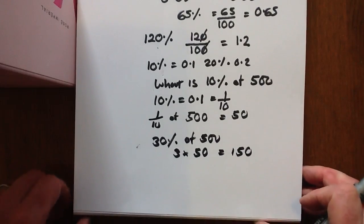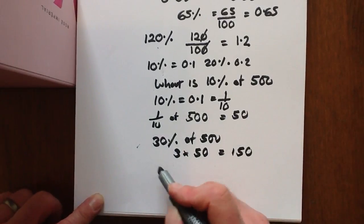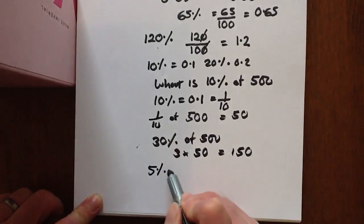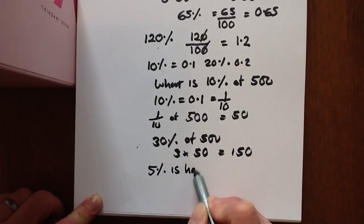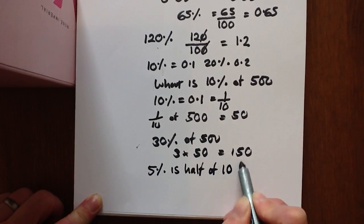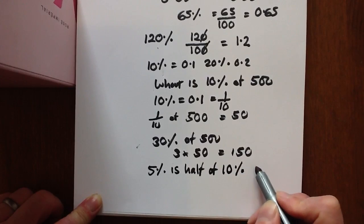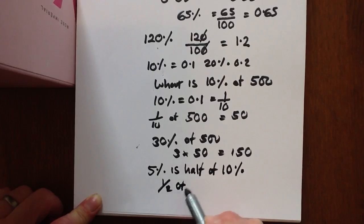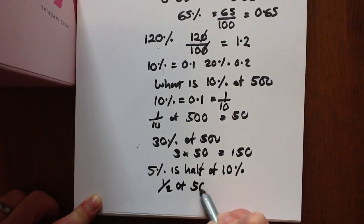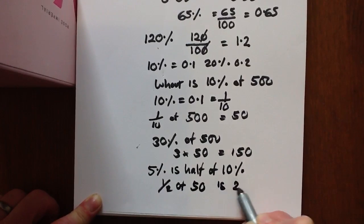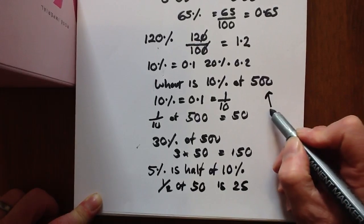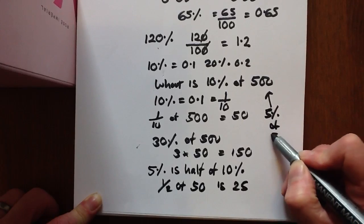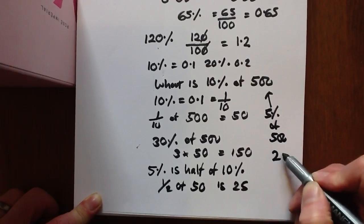Another thing worth knowing is what 5% equals, because this could come up quite a bit. 5% is half of 10%. Where 10% was 50, half of 50 is 25. So 5% of 500 is 25.